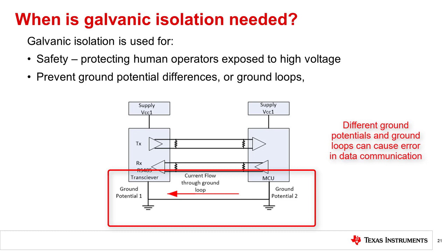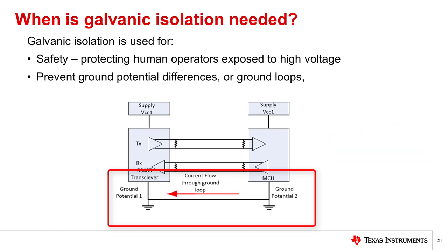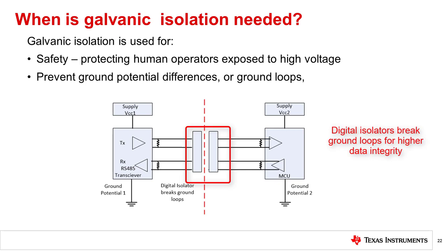Ground loops can also provide paths that act as antennae, causing disturbances from environmental noise. The most common example of environmental noise would be 50-60 Hz noise, which can pick up and induce unwanted currents in the system grounds. Digital isolators are used to break the ground loop, thereby preventing noise pickup and maintaining communication integrity.